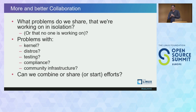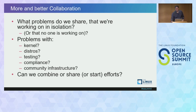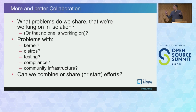What problems do we share that we're working on in isolation? If I did a comprehensive poll of the room, I'd find some of you doing the same thing as someone in another part of the room — not the exact same thing, but similar work: fixing up a Wi-Fi driver, or wrestling with some aspect of your distribution. Where do the problems lie? Think about where you're spending your engineering resources — the kernel, distros, testing, compliance, community infrastructure.